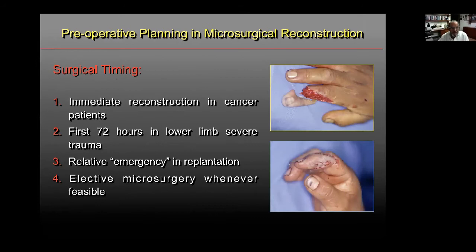Regarding timing, in cancer patients it is ideal to perform the free flap immediately, following Mark Godina's principles. In patients with severe lower limb trauma, an emergency flap within the first 72 hours gives a better functional outcome and faster recovery. In replantation it can be a relative emergency, but it's better to have everything set up prior to going to the OR—otherwise, without everything ready you can truly struggle and lose the replantation.